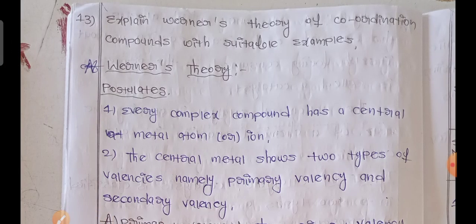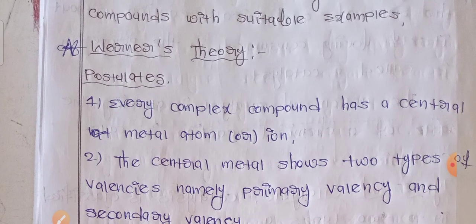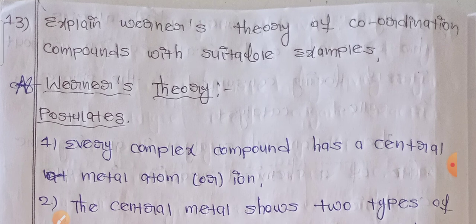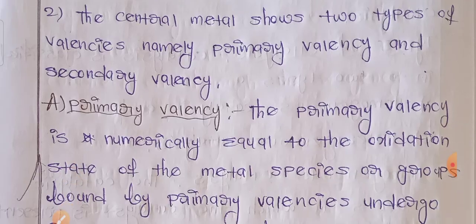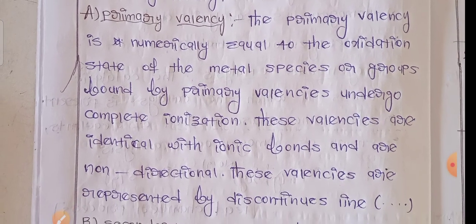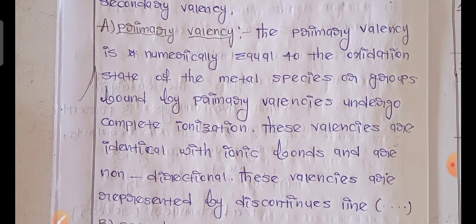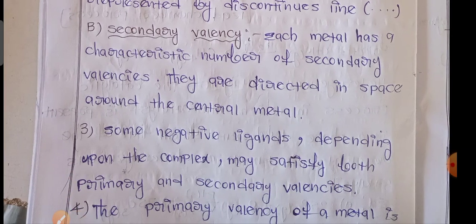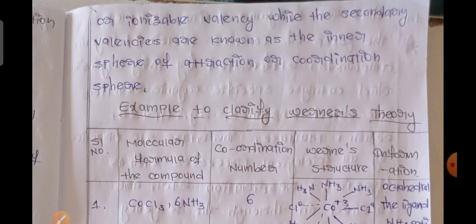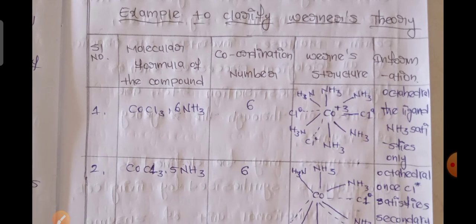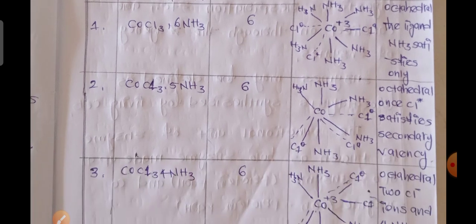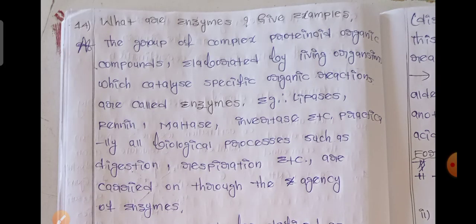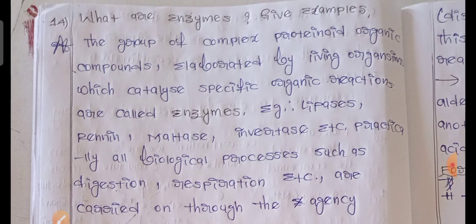Explain Werner's theory of coordination compounds with suitable examples. Werner's theory involves primary valency and secondary valency. Primary valency, secondary valency — these are key concepts. Also: carbohydrates, enzymes, vitamins.